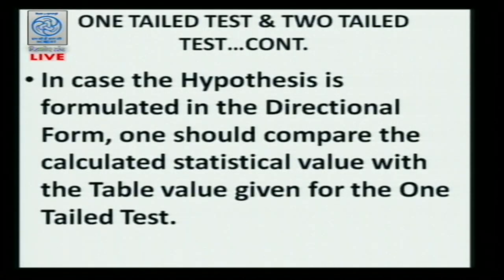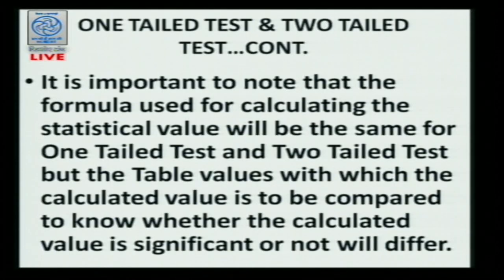In hypothesis formulated in the directional form, one should compare the computed value with the value given under the one-tail test. These values are given in standard books. It is important to note that the formula used for calculation will be the same — whether you use a one-tail test or a two-tail test with the T-test, the formula will not differ. What will differ is when you compare the T value with the standard value — the standard value will change. That is the only difference.